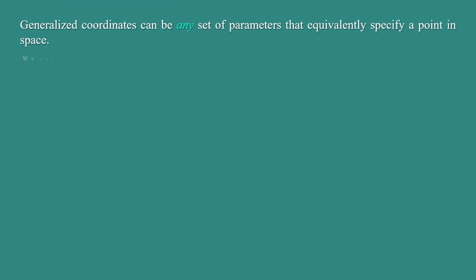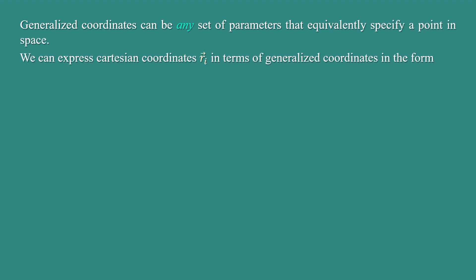Generalized coordinates can be any set of parameters that equivalently specify a point in space. We can express Cartesian coordinates Ri for the ith particle in terms of generalized coordinates in the form Ri equal to Ri of q1, q2, q3 up to qf, t, where t is time.